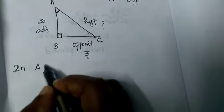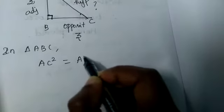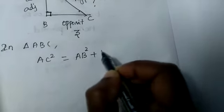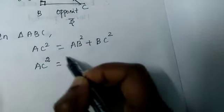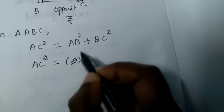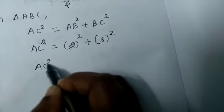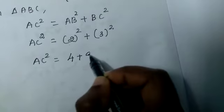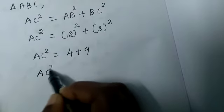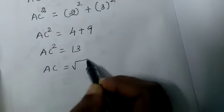We don't know the hypotenuse. Now using Pythagoras theorem, AC square equals AB square plus BC square. That is 2 the whole square plus 3 the whole square. AC square equals 4 plus 9 equals 13. Now AC equals root 13.